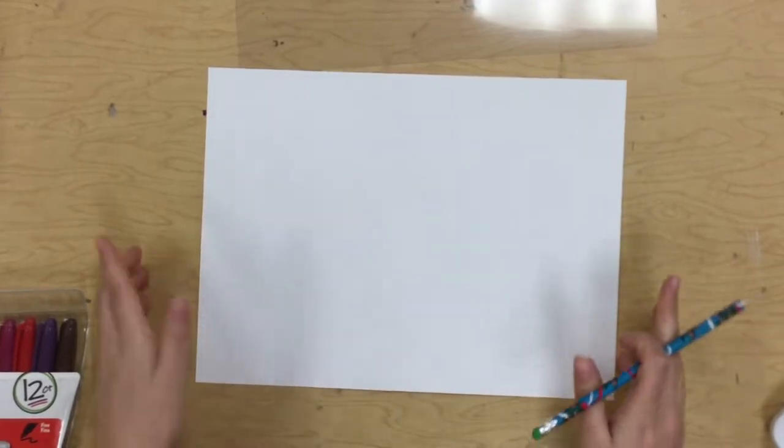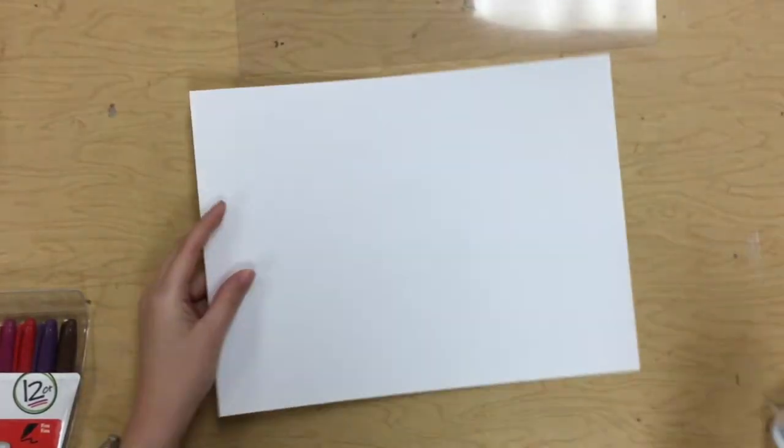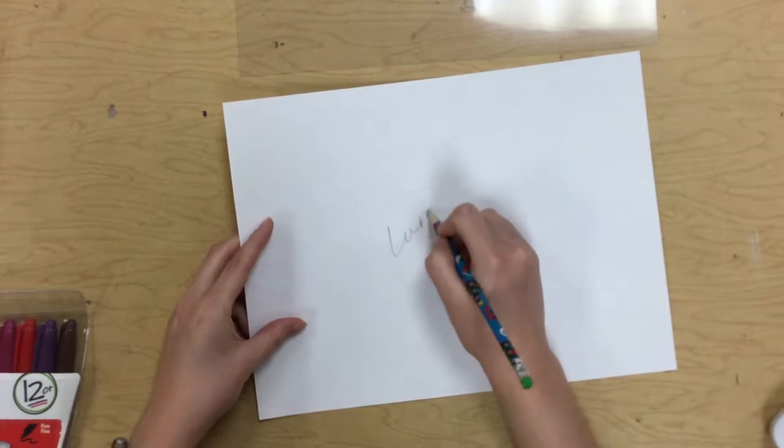Alright sixth grade, today we're going to be making ships in a bottle. What you're going to do is start out with a white piece of paper. You're going to write your name and class code on the back.